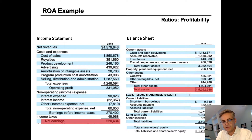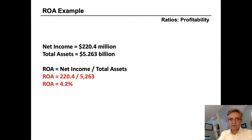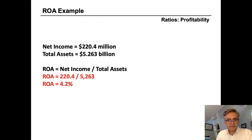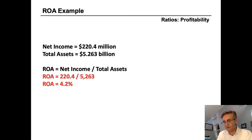Looking over to the balance sheet on the right-hand side, we can see that total assets was $5.2 billion. Using those two in our equation, we take net income divided by total assets and arrive at a return on assets of 4.2%. This means that for every dollar of assets invested in the company, Hasbro returns 4.2 cents.